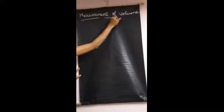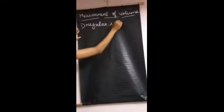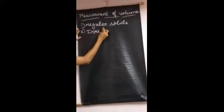Dear children, let us continue in the subtopic: measurement of volume. In measurement of volume, we need to measure two types of solids — regular solids and irregular solids.